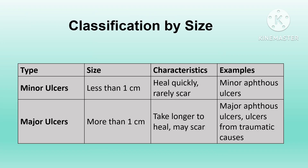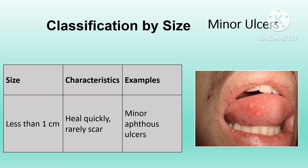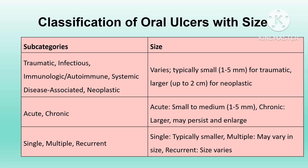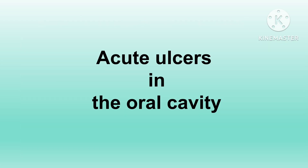Based on size, ulcers are classified into minor ulcers (less than 1 cm) and major ulcers (more than 1 cm). Major ulcers take a long time to heal and may scar, as with major aphthous ulcers or traumatic cases. Minor ulcers are smaller, heal quickly, and rarely scar — an example being minor aphthous ulcers.